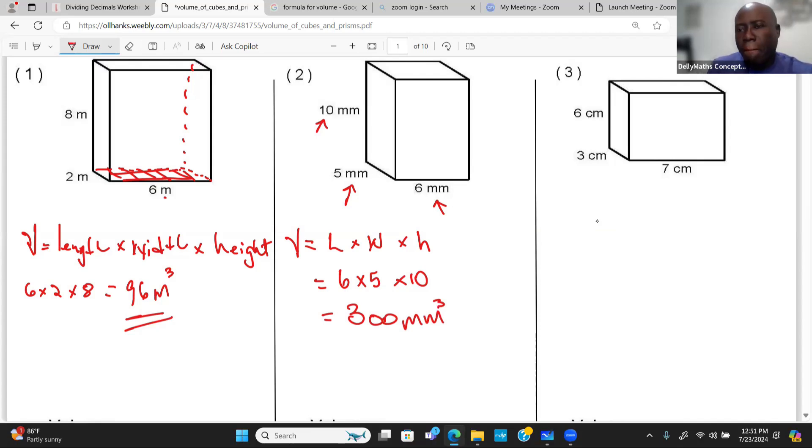All right, let's take a look at the third one. Length, width, height. So the volume is going to be, again, length times the width times the height, which is 7 times 3 times 6. So 21 times 6. This will give us about 126. Remember, the unit of measure is centimeter to the third, it's volume.